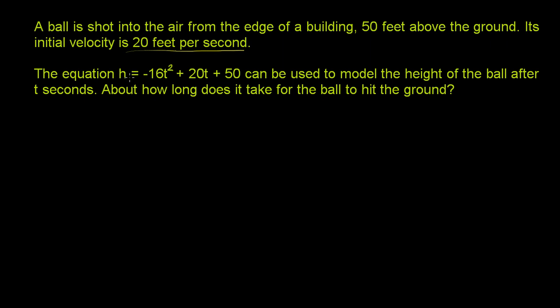If this is the height, the ground is when the height is equal to 0. So hitting the ground means that h is equal to 0. So we need to figure out at which times does h equal 0. We're really solving the equation: 0 is equal to negative 16t squared plus 20t plus 50.